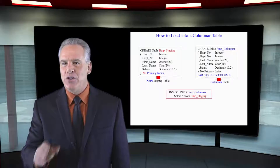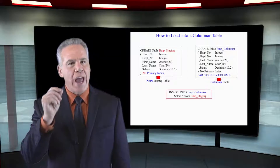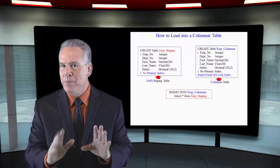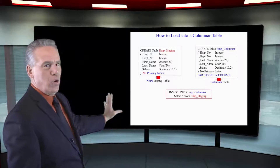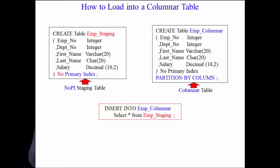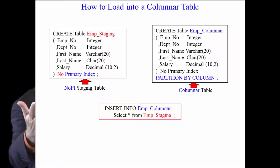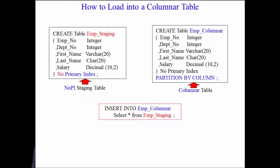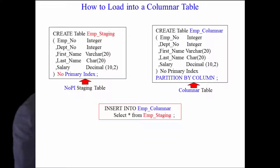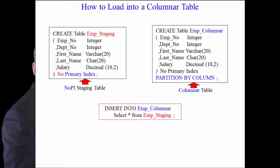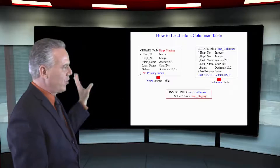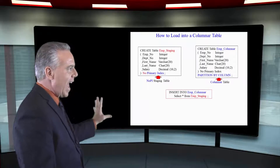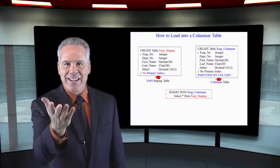Here's how you load data into a columnar table. You create a no PI table that's a staging table — as you can see here it's called emp_staging with no primary index. Then you create a columnar table called emp_columnar, which has no primary index and is partitioned by column. You load to the no PI table, then do an insert select into the columnar table: insert into emp_columnar select * from emp_staging. Data is loaded.